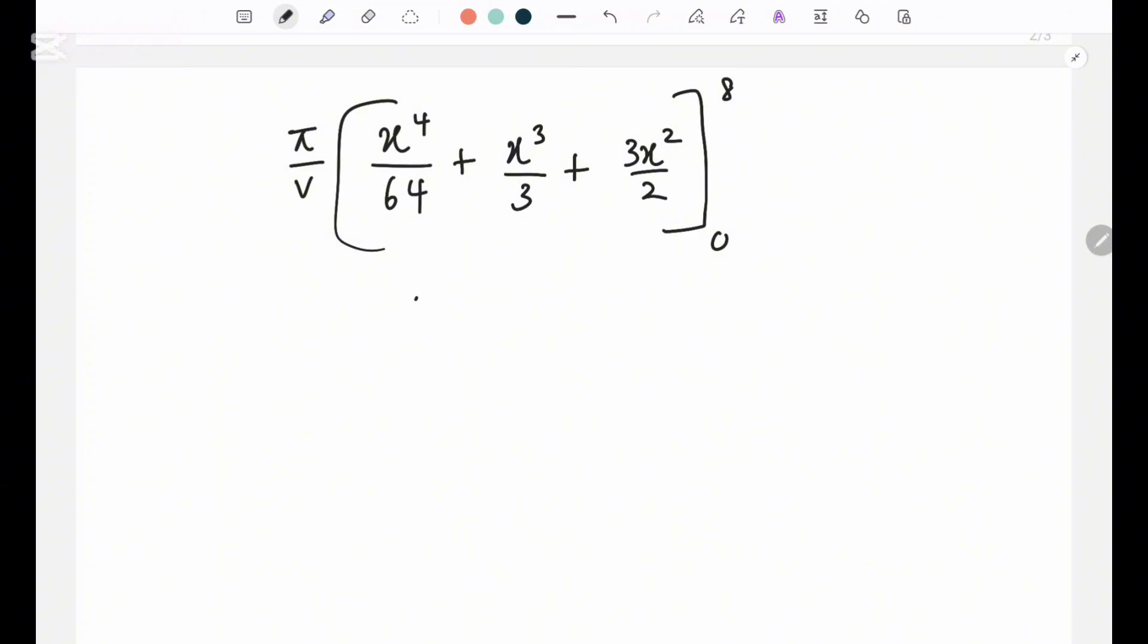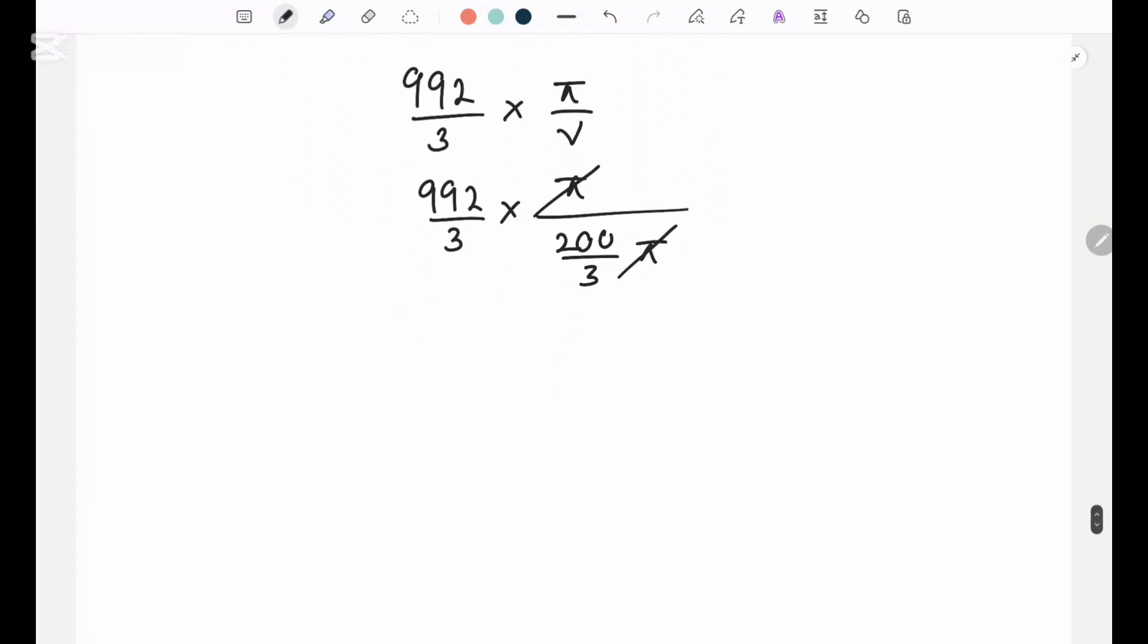So I get 992 over 3 for that, into pi over v had 200 over 3 pi. Let's cancel those off. So now you get 992 over 3 into 3 over 200. This will give you 4.96. That is the center of mass.